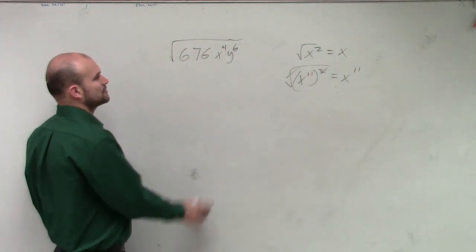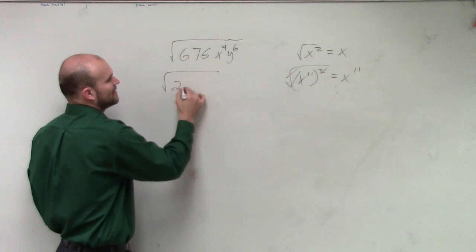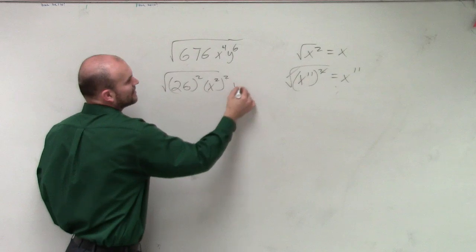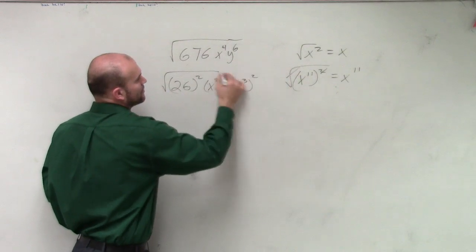So now, when I take the square root, if I can rewrite these as square roots, I can rewrite 26 squared, x squared squared, and y cubed squared. Now, this is very important, because now,